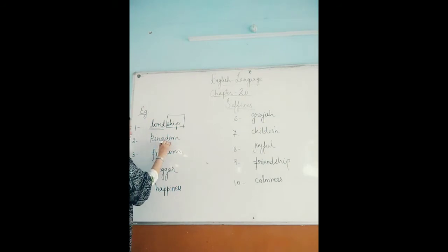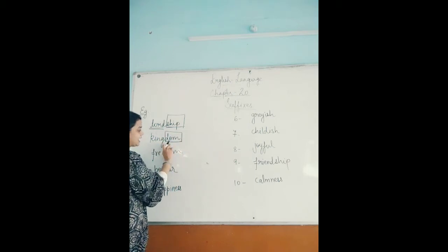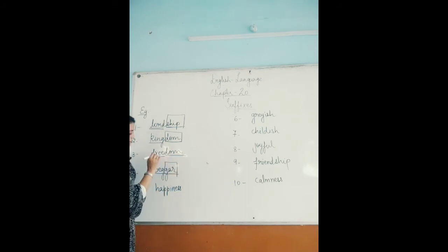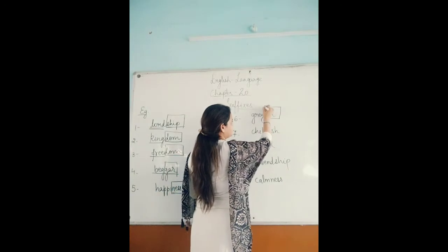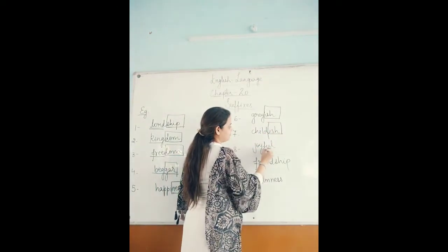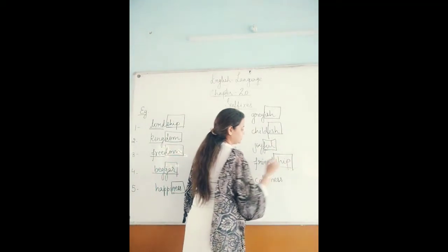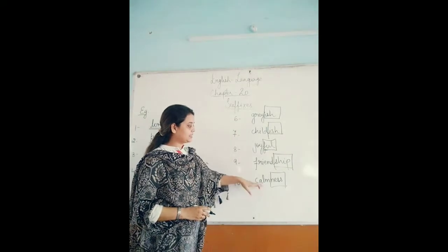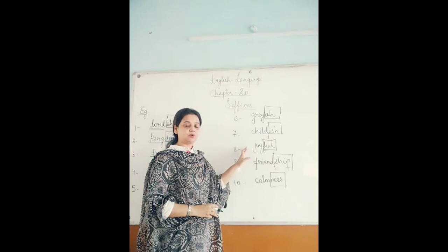In kingdom, king is the base word and dom is the suffix. In freedom, dom is the suffix and free is the base word. In beggar, beg is the base word and gar is the suffix. In happiness, ness is the suffix. In childish, ish is the suffix. In joyful, ful is the suffix. In friendship, ship is the suffix. If we remove the suffix, we can see that all the remaining parts are root words or base words.